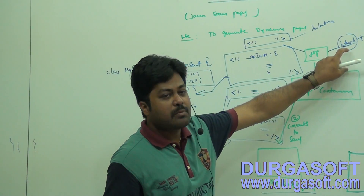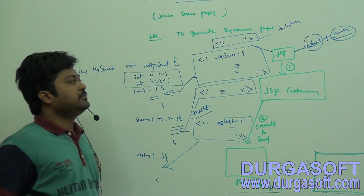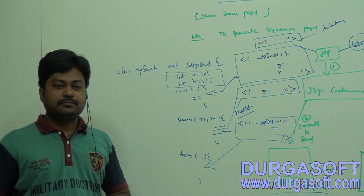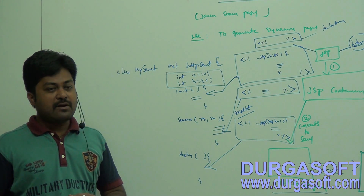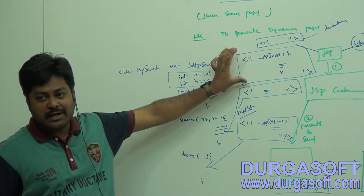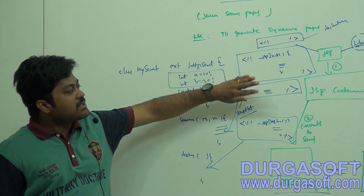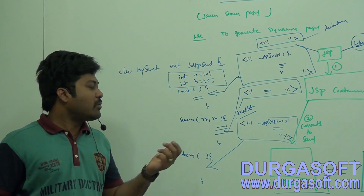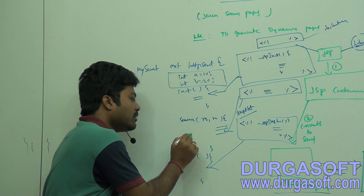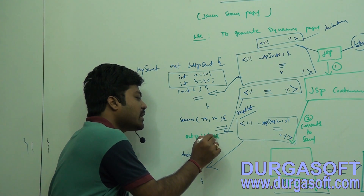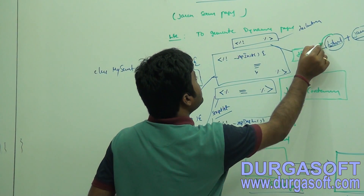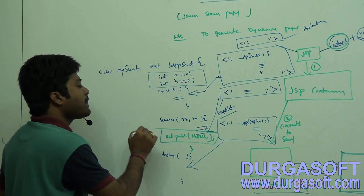In a JSP page, you can also write HTML code. Inside declaration or scriptlet tags, you write Java code. Outside the tags, you write HTML code, and that HTML code is placed into out.println statements. If you want to print dynamic outputs from the service method, you can use out.println. The out reference is a PrintWriter reference.